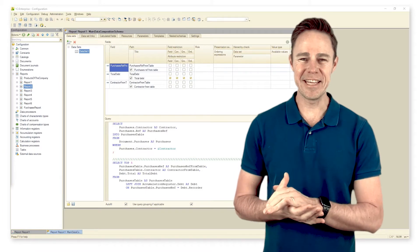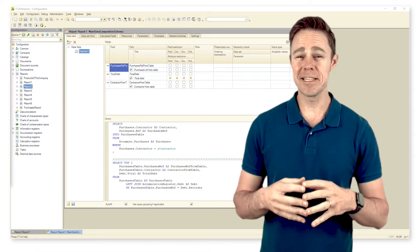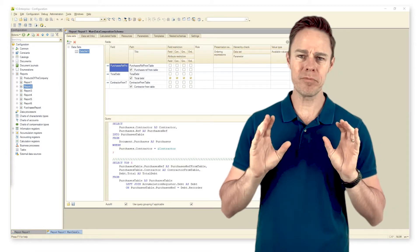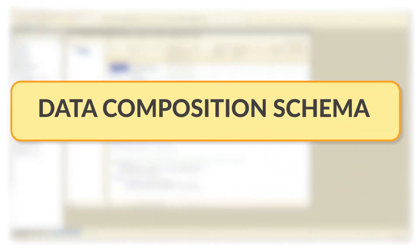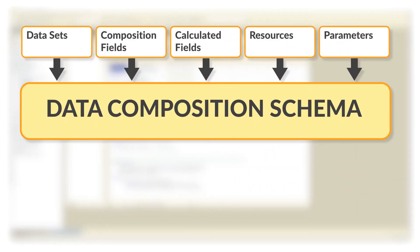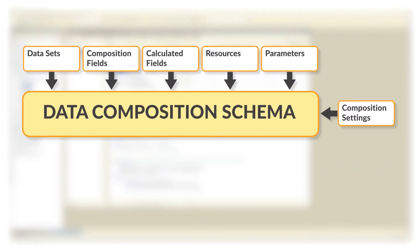Now, as we've added the required datasets for our data composition schema, let's take a closer look at its components. As I mentioned before, the DCS is too vast to fit into our course, but we don't want you to get lost among all these fields and settings. I suggest that we briefly touch upon almost every DCS element to give you a good starting point should you decide to dive deeper into the subject later.